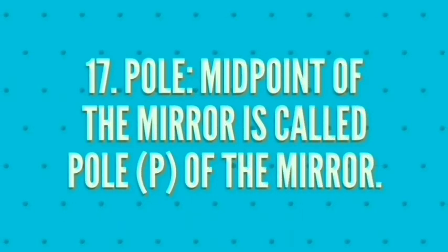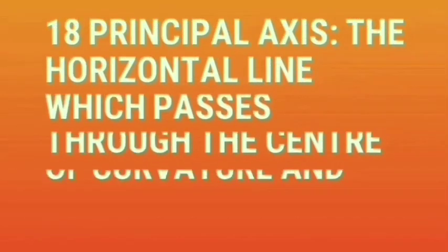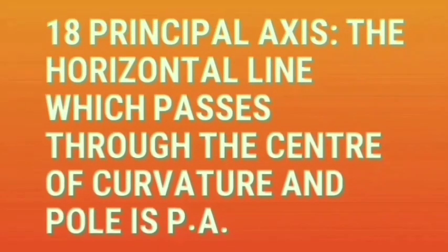Midpoint of the mirror is called pole of the mirror. The horizontal line which passes through the center of curvature and pole is called principal axis.